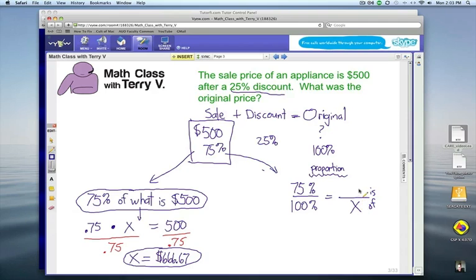The original price. The is, $500 is the part that represents 75%. So is over of, that's a quick little word trick there to remember. The part over the whole. 75% is the part. The whole is 100%. Now, in this case, I'm going to multiply.